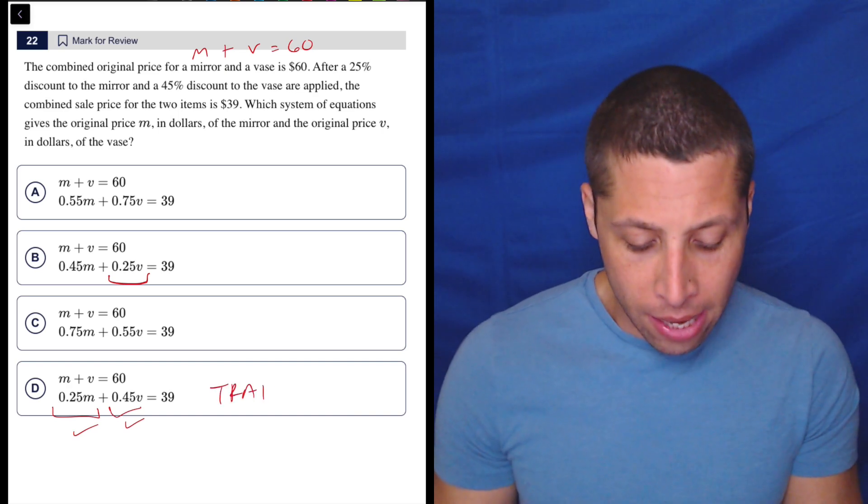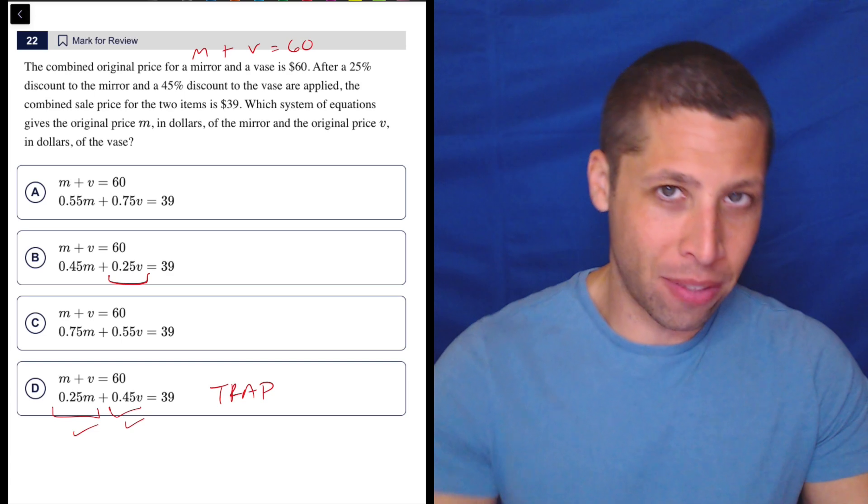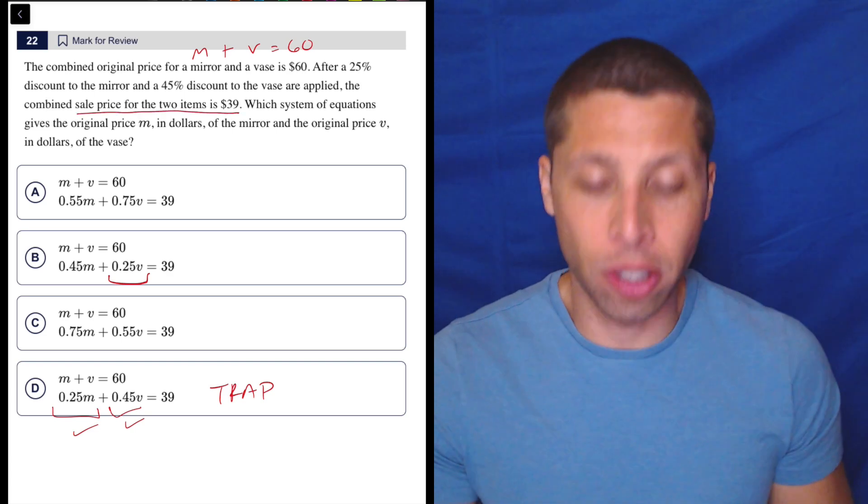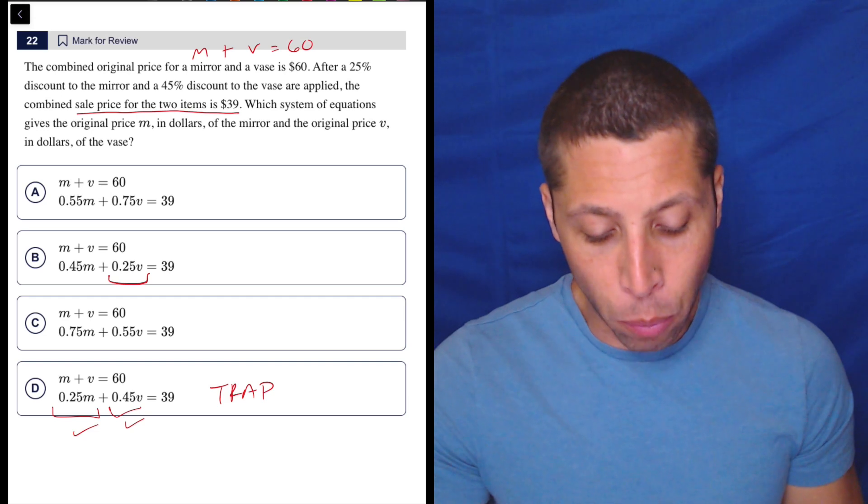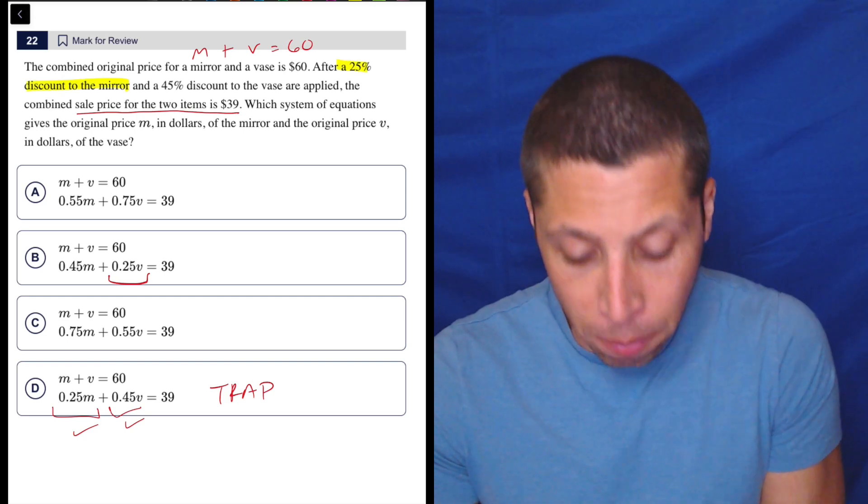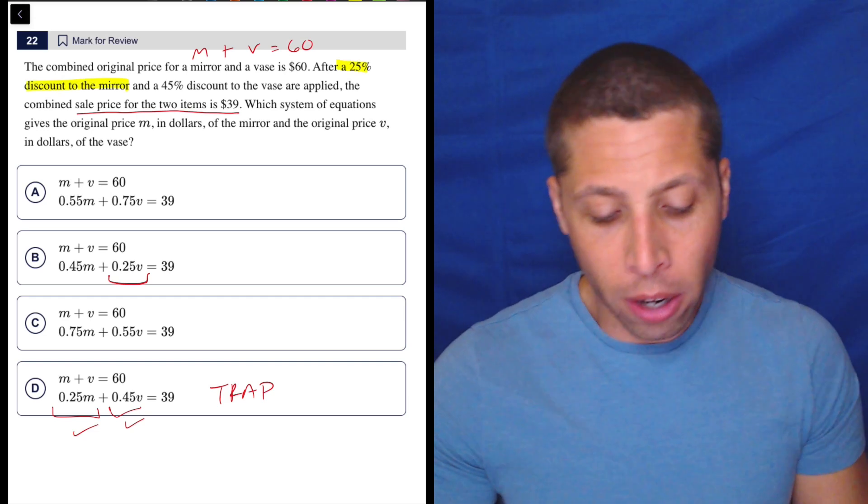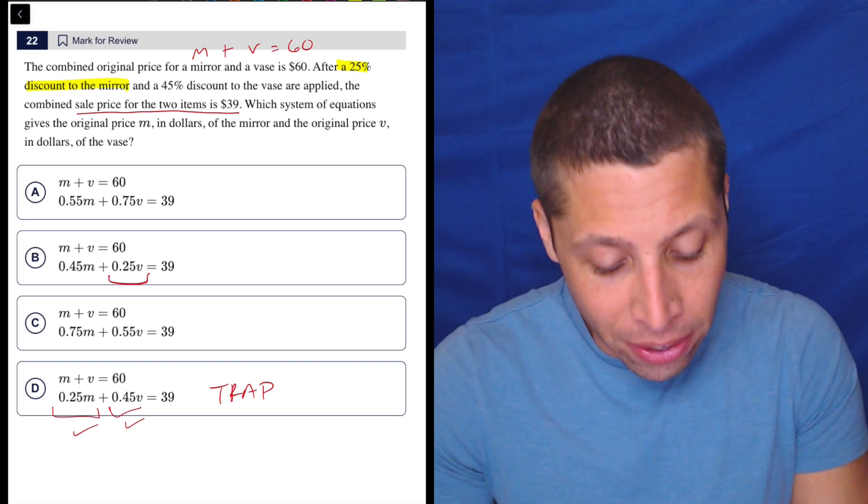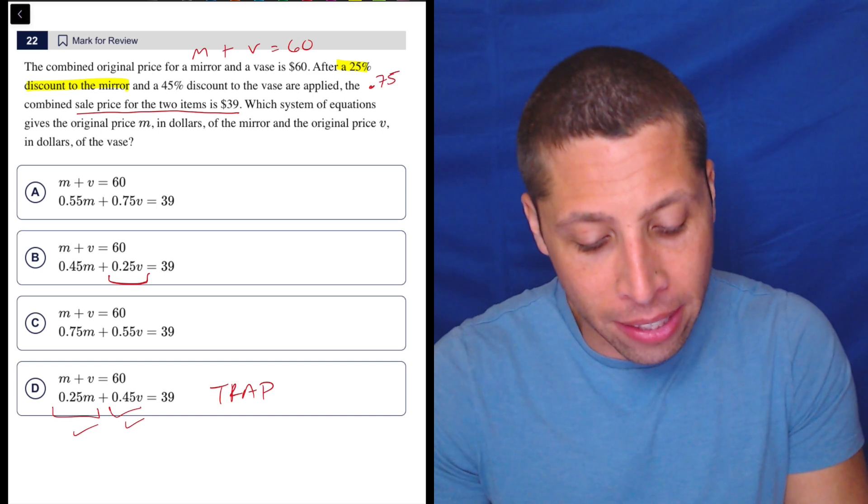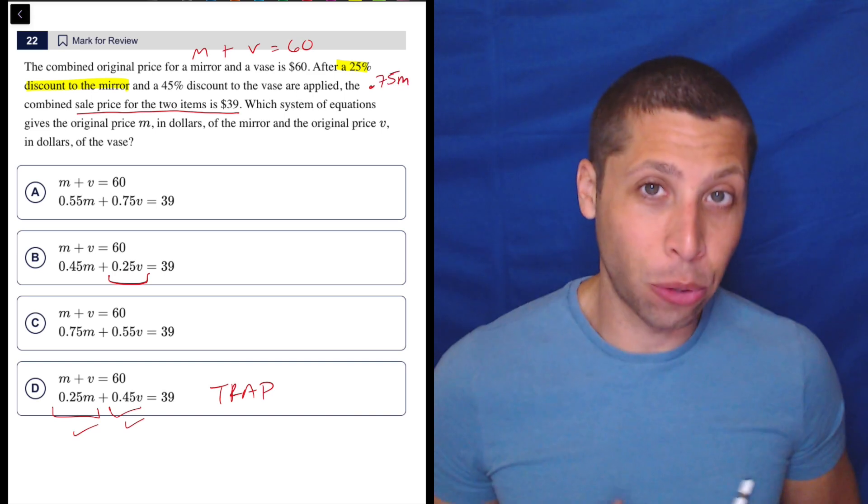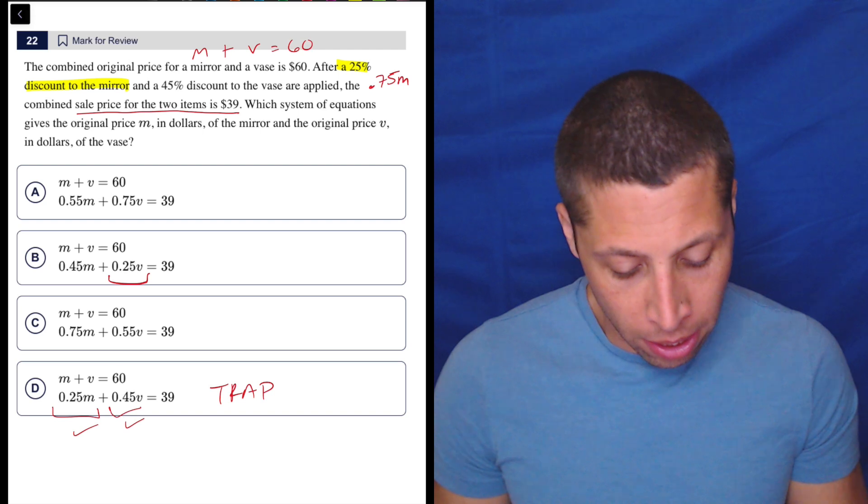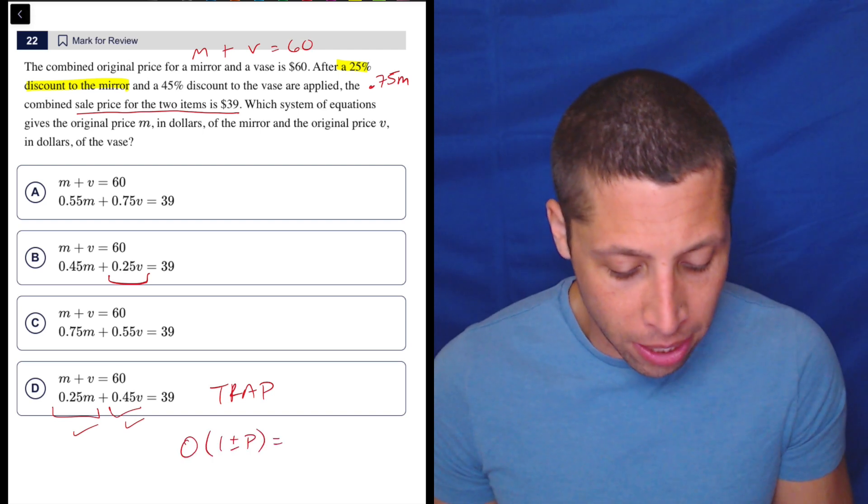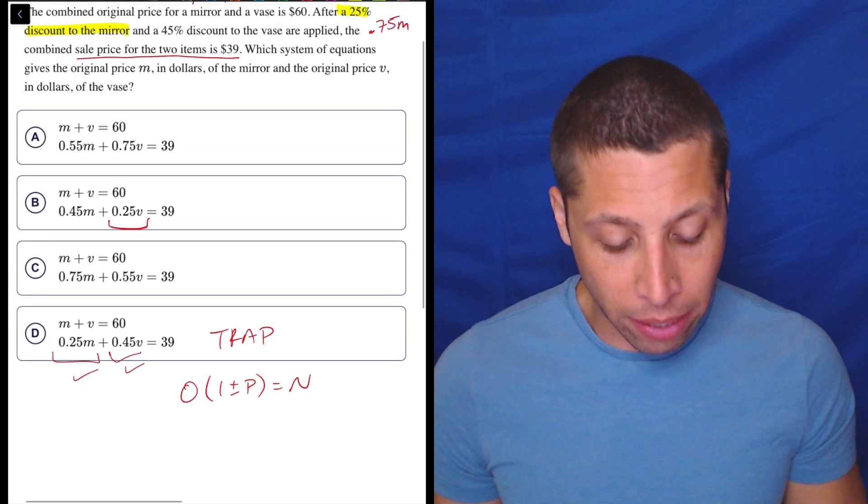This is the trap: this is finding the amount of the discount. But the way the equation is supposed to work is that the final price is $39. So for example, with the 25% discount to the mirror, we are not interested in 25% of M. We are interested in 75%. Because what's going to happen is we need to take off the 25%. This is if we're using the open formula. This is a case where we would use the one plus or minus P formula. So if we kind of apply that here, the original value of the original price is M.